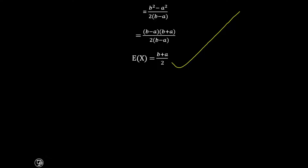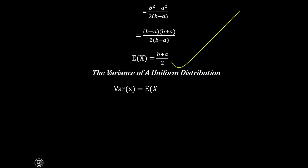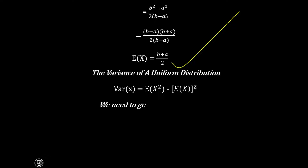Now we need the variance. For us to get the variance, we apply the formula: variance of x equals E of x squared minus the expected value of x, all raised to power 2. The value we got as the mean, E of x equals b plus a divided by 2, is what we will square. But before we do that, we need to first find E of x raised to power 2.